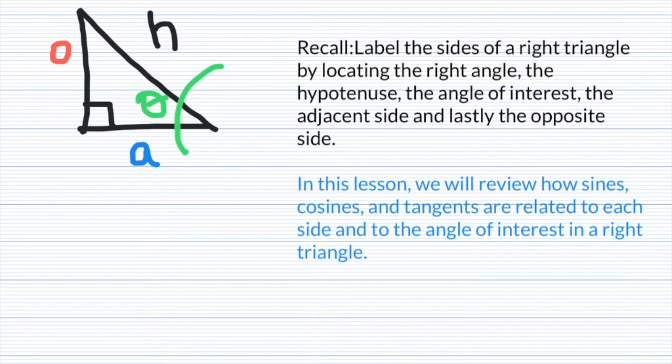From our last lesson, we label the sides of a right triangle by first locating the right angle, the hypotenuse, the angle of interest, the adjacent side, and lastly the opposite side. In this lesson, we'll review how sines, cosines, and tangents are related to each side and to the angle of interest in the right triangle.